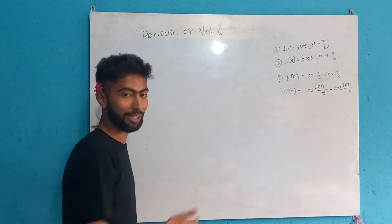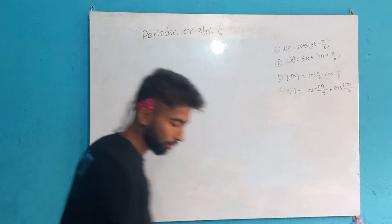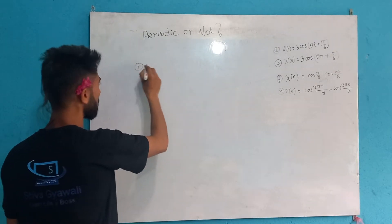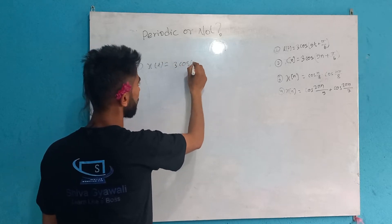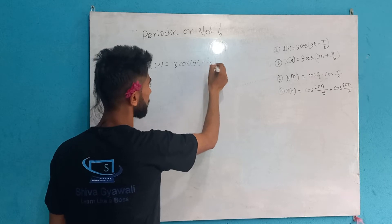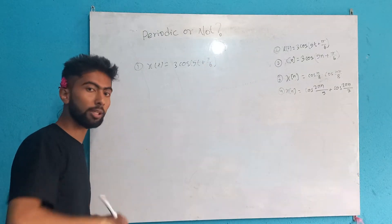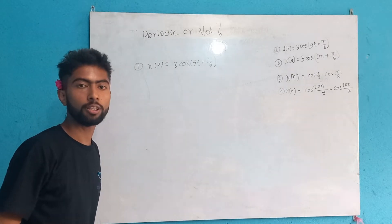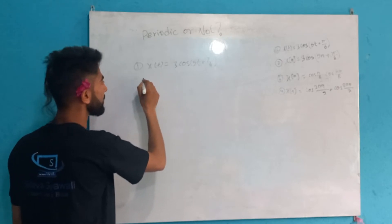Welcome back. I will give you an example question. Let's do the first question: x(t) = 3cos(5t + 5π/6). This is a continuous-time signal.